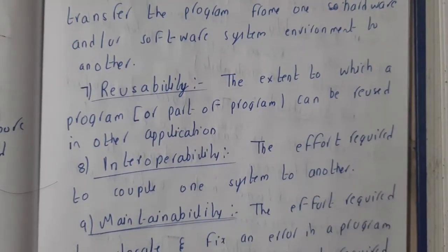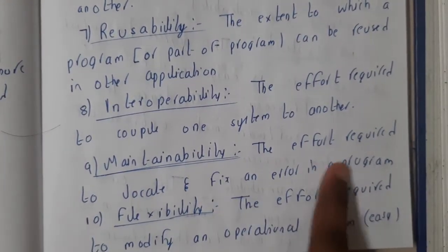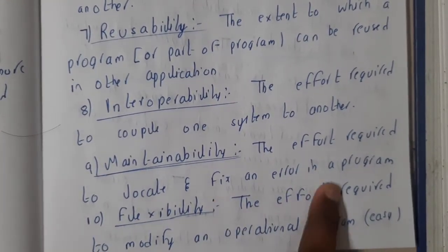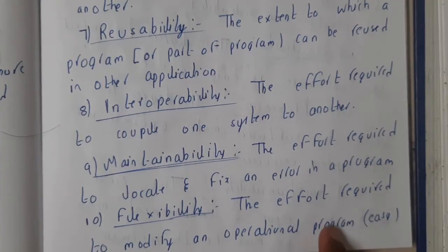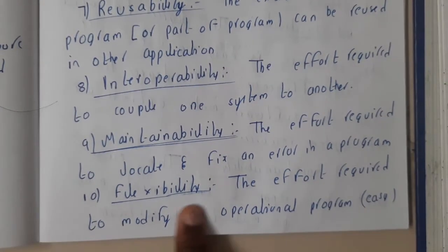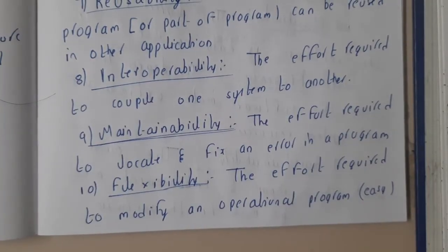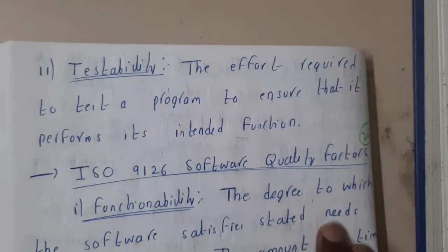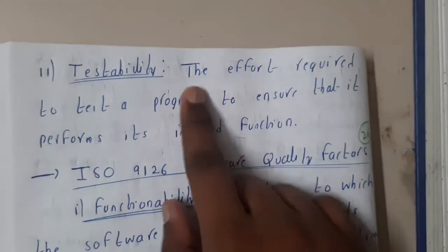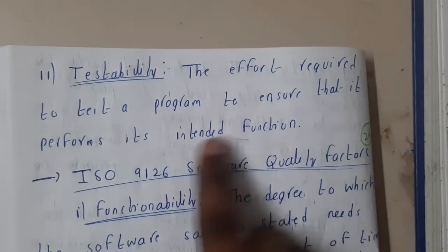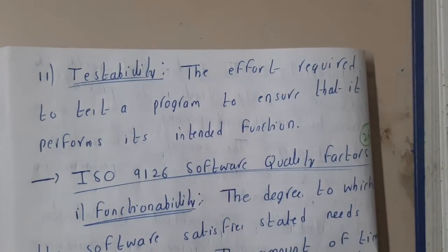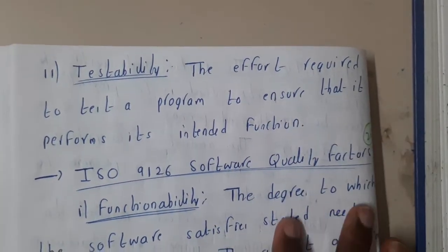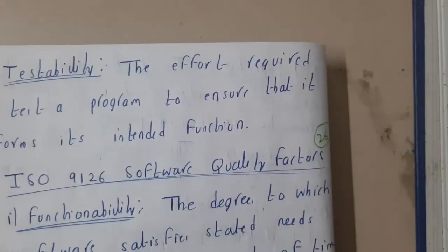Maintainability is the effort required to locate and fix errors — we maintain the software to keep it running properly. Flexibility is the effort required to modify an operating system easily; if modifications can be done easily, the system is considered flexible. Testability is the effort required to test a program to ensure it performs its intended functions.